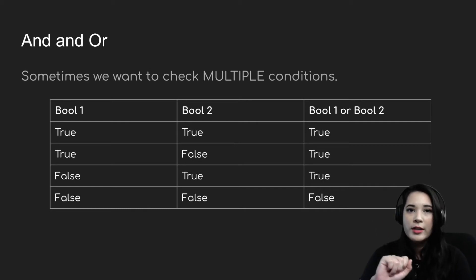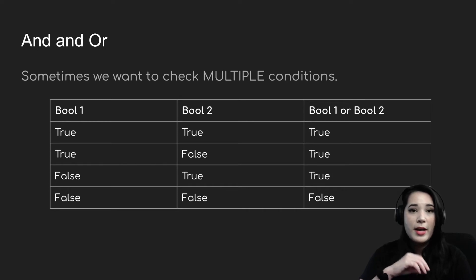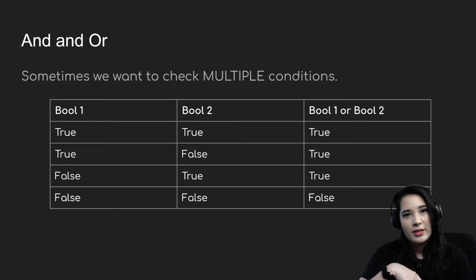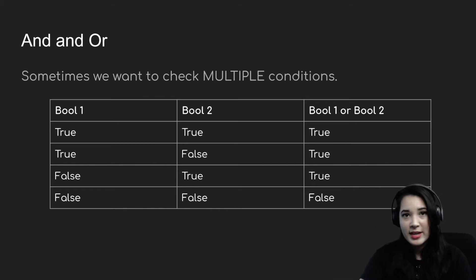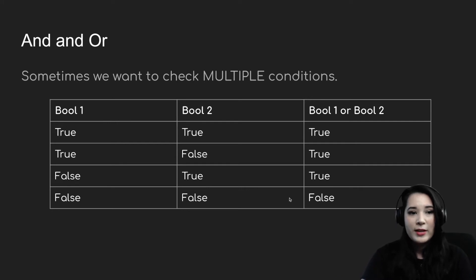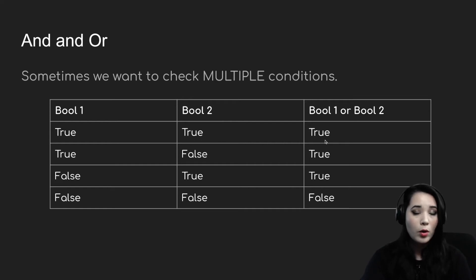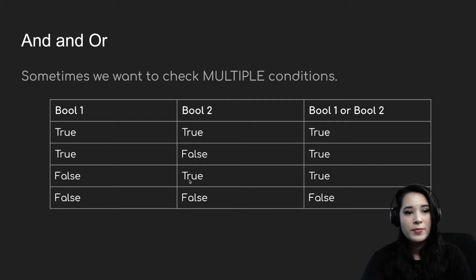On the other hand, we have or. Or checks whether either or both conditions are true. For example: if it is Monday or Wednesday, go to the Keck Center. If it's Monday I go, if it's Wednesday I go. Or: if I'm hungry or my friends are there, I'd like to go to Bruxy's — either condition alone is enough. In the truth table: if both booleans are true, or is true; if one is true and one is false, or is true; if one is false and one is true, or is true. The only time or is false is when both booleans are false.